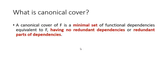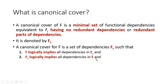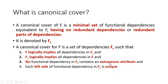Now let us understand what is canonical cover. The canonical cover of a set F is a minimal set of functional dependencies equivalent to F, having no redundant dependencies or redundant parts of dependencies. It is denoted by Fc. To find the canonical cover, Fc must satisfy four conditions: F logically implies all dependencies in Fc; Fc logically implies all dependencies in F; no functional dependency in Fc contains any extraneous attribute; and each left-hand side of functional dependencies in Fc is unique.